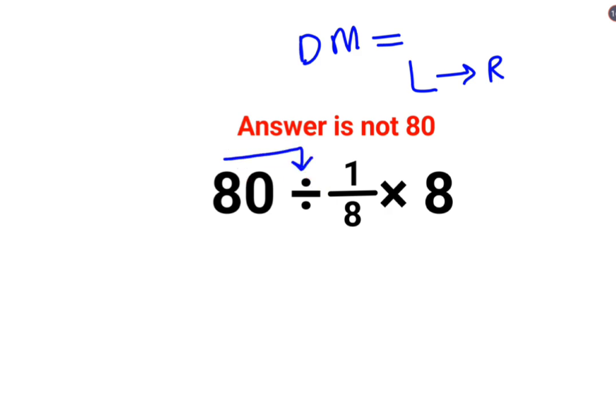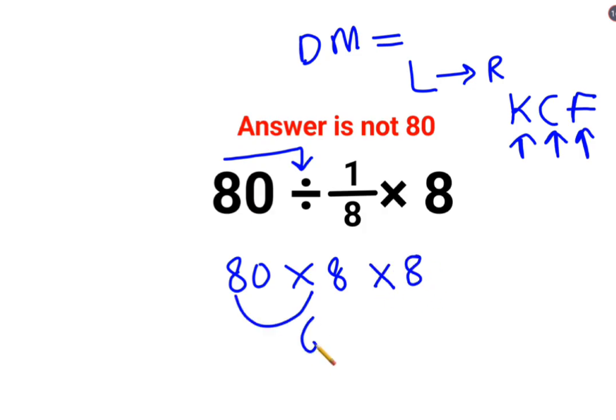So first we have 80 divided by 1 upon 8. When you have division, you will follow the rule of KCF where K stands for keeping the first number as it is, C stands for changing the division sign to multiplication, and F stands for flipping or taking reciprocal of 1 upon 8 which is 8. So 80 into 8 is 640 multiplied by 8.